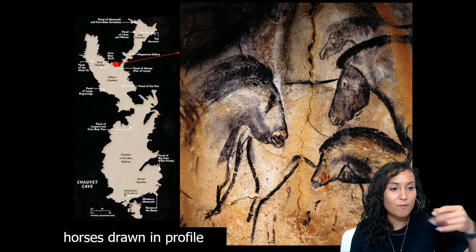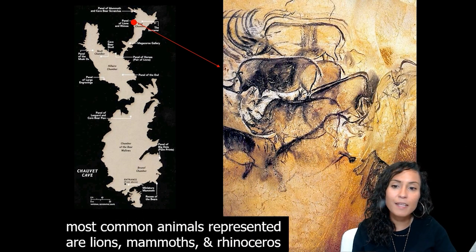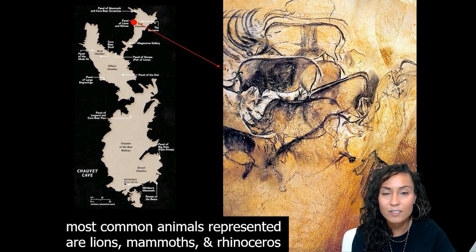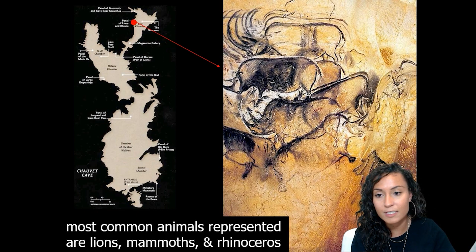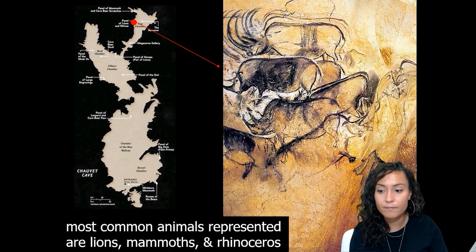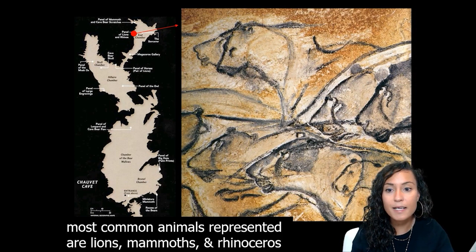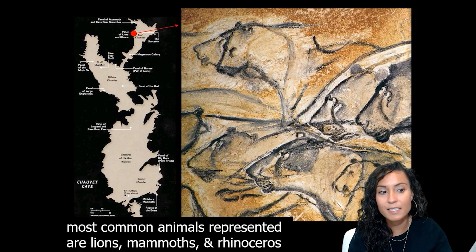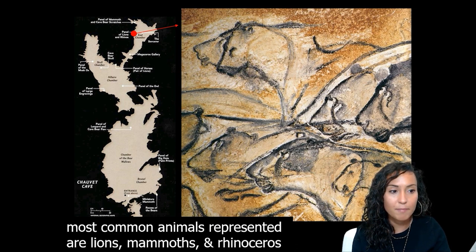The cave offers amazing examples of perspective — horse heads drawn in profile, overlapping each other. Many of the animals represented in Chavot were dangerous members of the late Ice Age. The most common animals are lions, mammoths, and rhinoceroses, which make up 63% of all images within Chavot — a remarkably high percentage compared to later periods of cave art. Horses, bison, ibex, deer varieties, panthers, and owls are also represented.